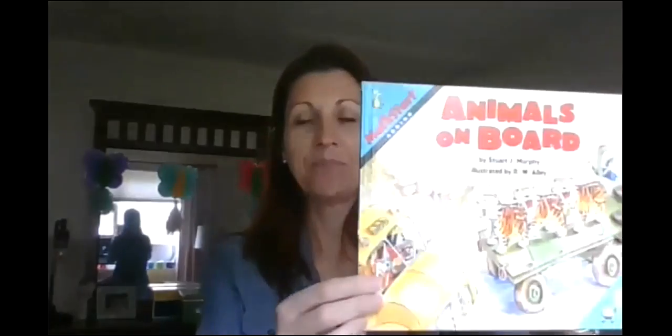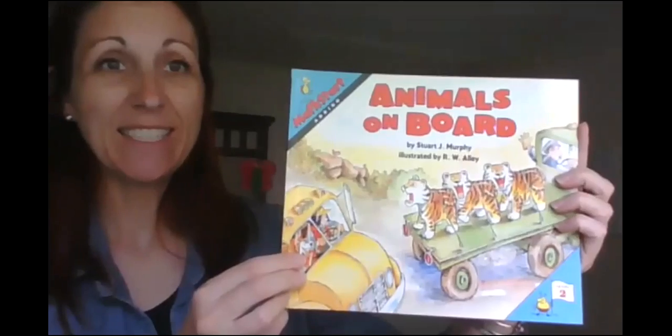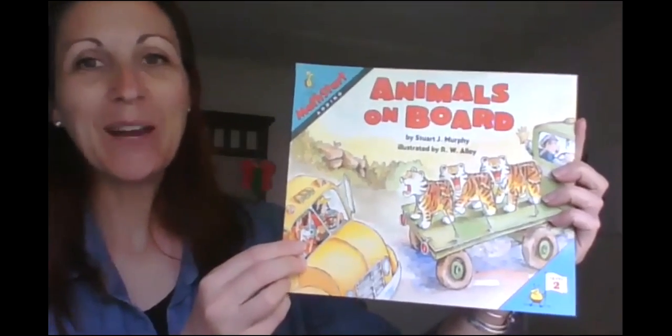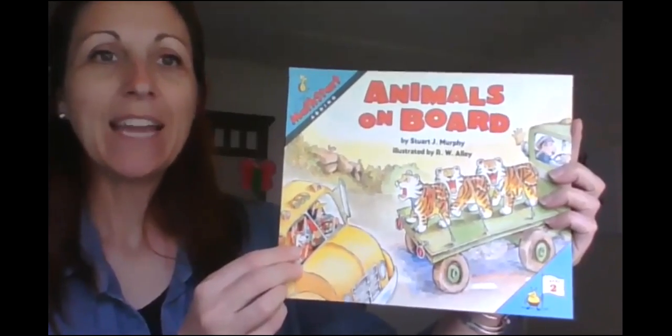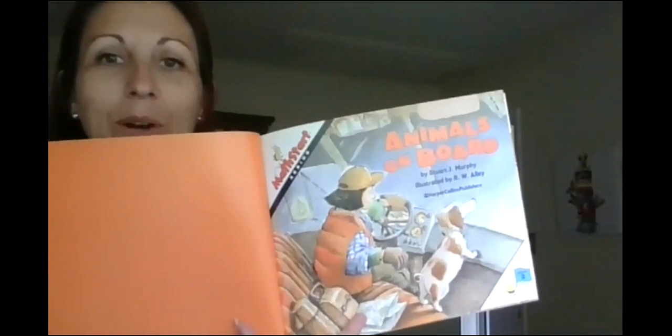This book is called Animals on Board. And it's a Math Start series book, which I really enjoy because it teaches some really great mathematical concepts. So the author is Stuart J. Murphy, and it's illustrated by R.W. Alley.